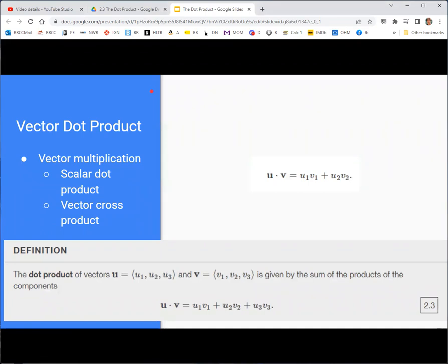So the notation of vector dot product is a little dot, kind of like you might see used in multiplication, because this is a type of multiplication between two vectors. So u dot v, what you do is you multiply the vectors component-wise, so multiply their first components, multiply their second components, and then you add them together.